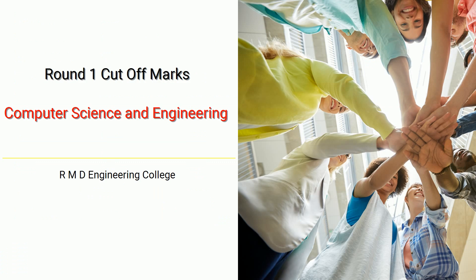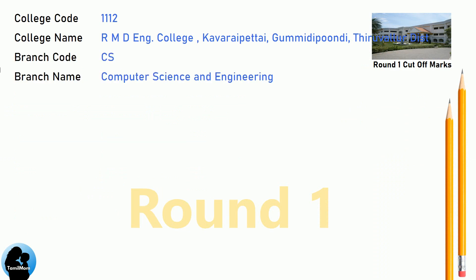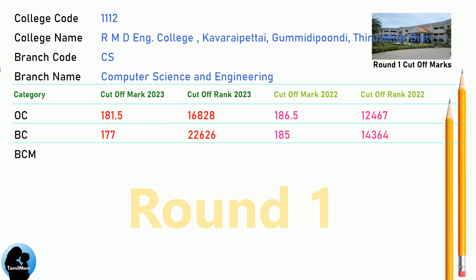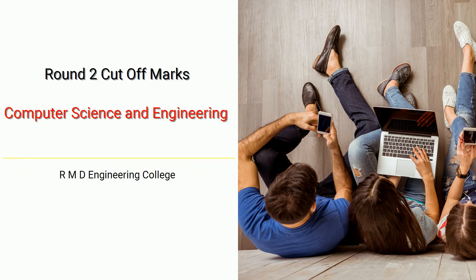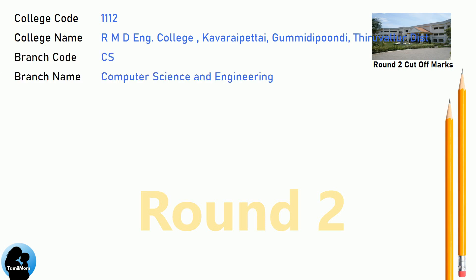DNA Round 1 Cut-Off for RMB Engineering College in Computer Science and Engineering. DNA Round 2 Cut-Off for RMB Engineering College in Computer Science and Engineering.